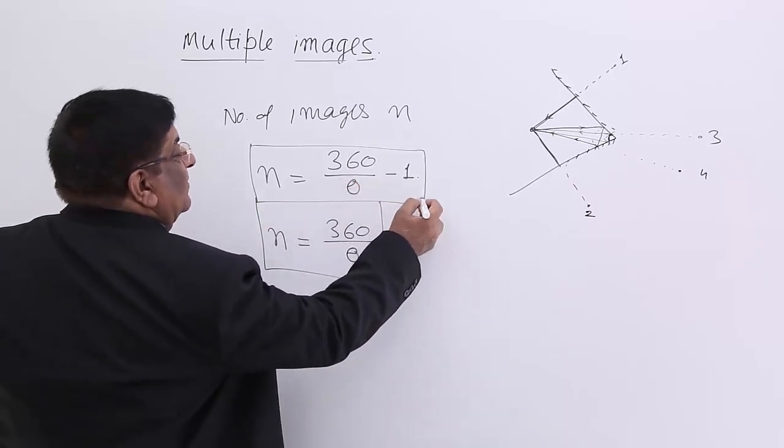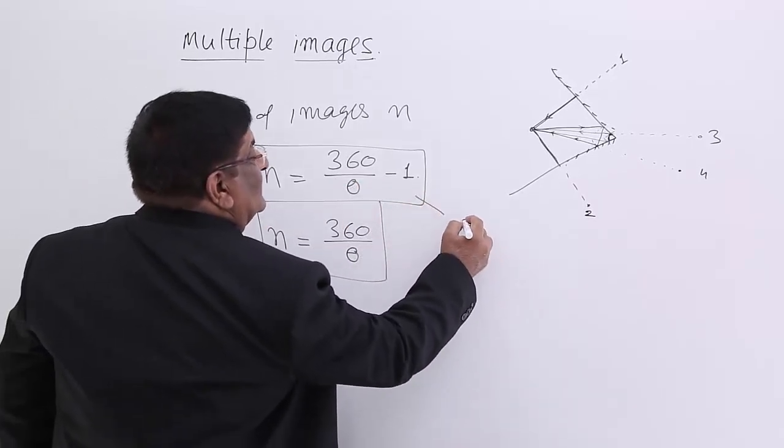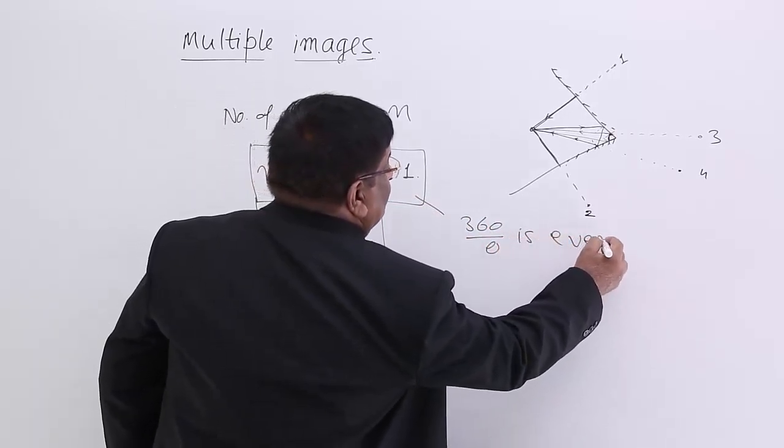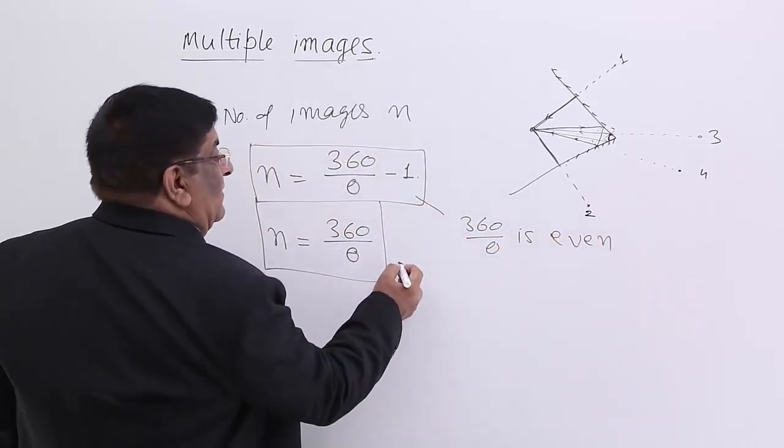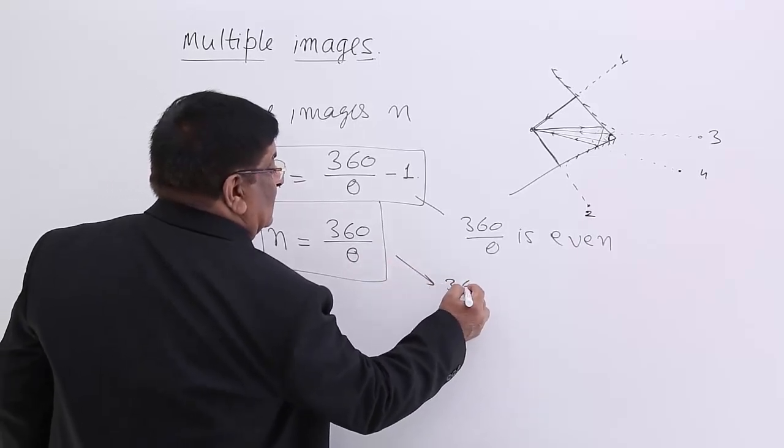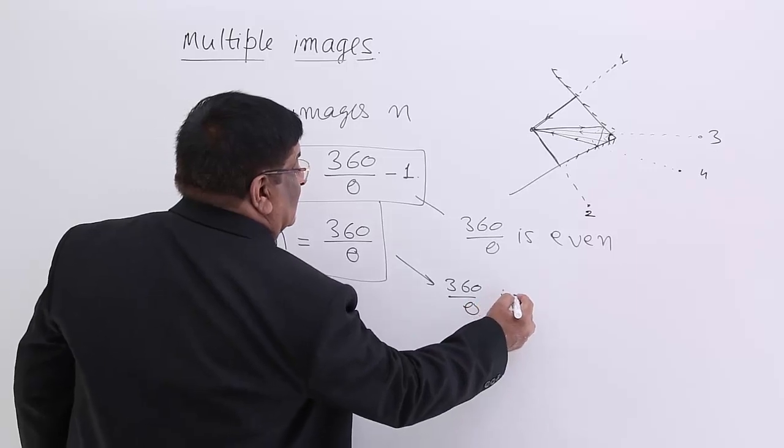This formula is to be applied when 360/θ is even. This is to be applied when 360/θ is odd.